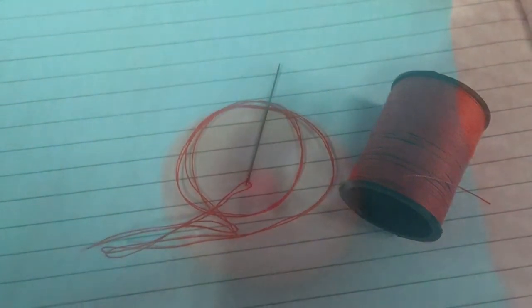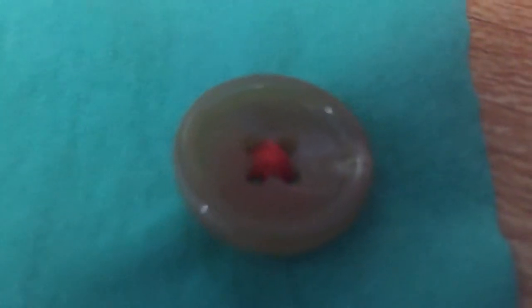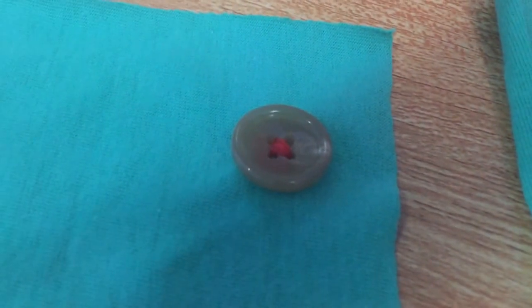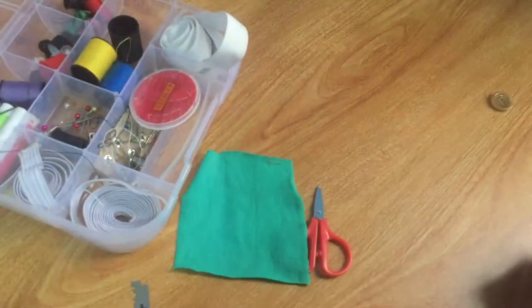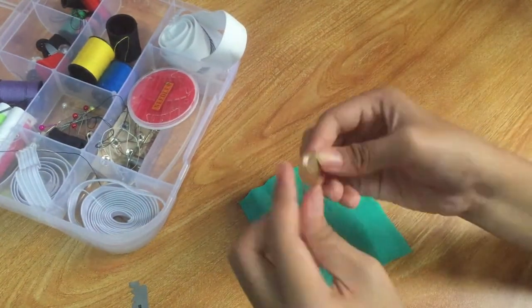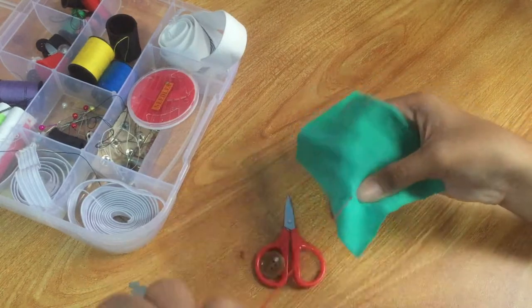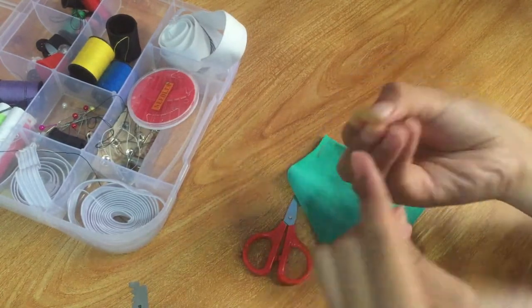Choose your button and thread. Select a suitable button and thread that matches the button, the garment, and any thread used to sew on other buttons. If you like, you can double the thread to make this job quicker.